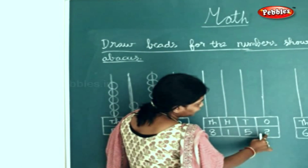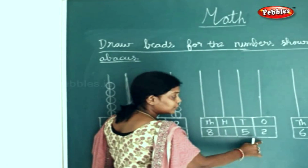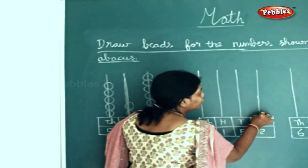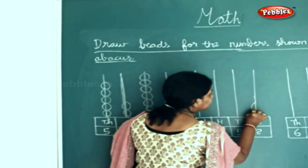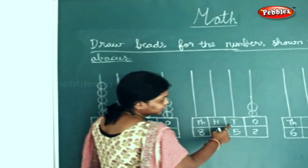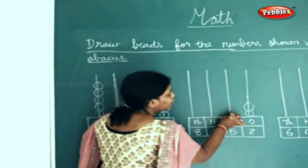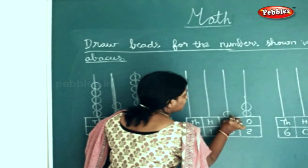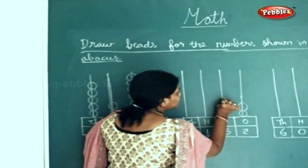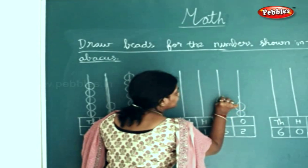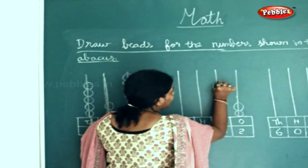How many do you find in the 1s place? 2. So how many beads will you draw? You will draw 2 beads here. How many beads do you have to draw in the 10s place? You will have to draw 5 beads: 1, 2, 3, 4, 5.